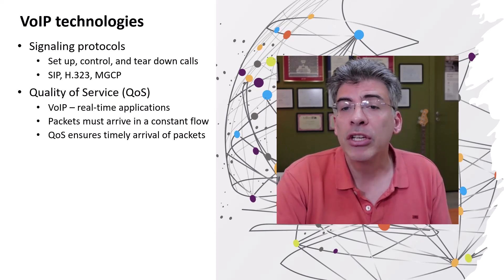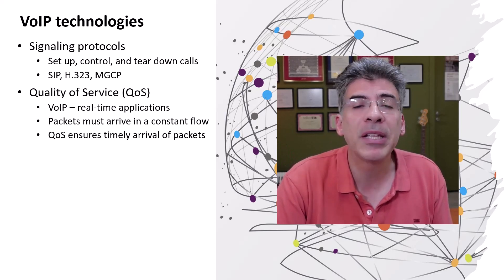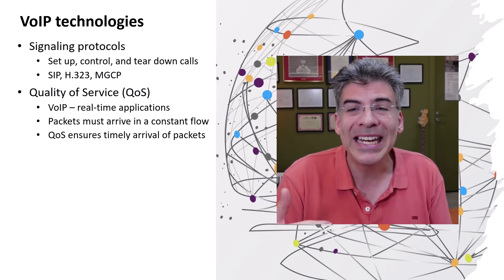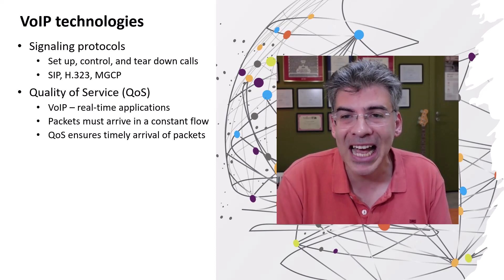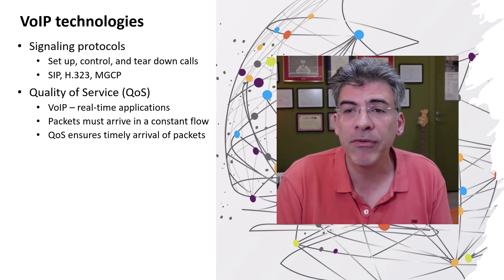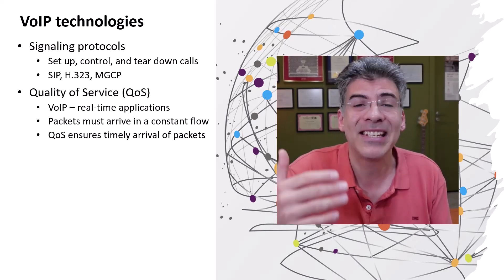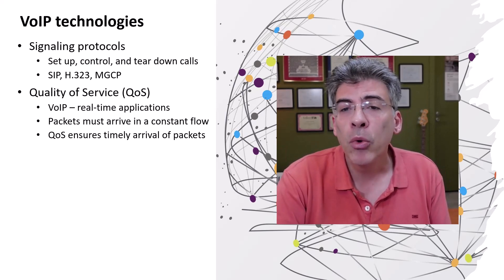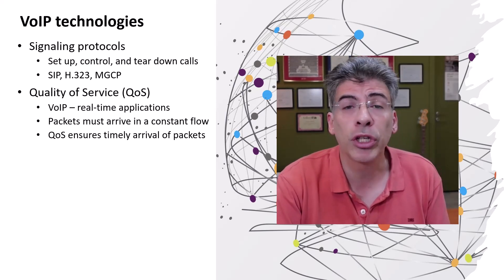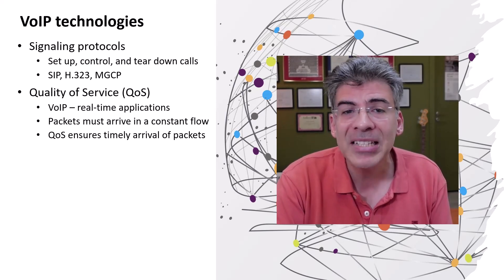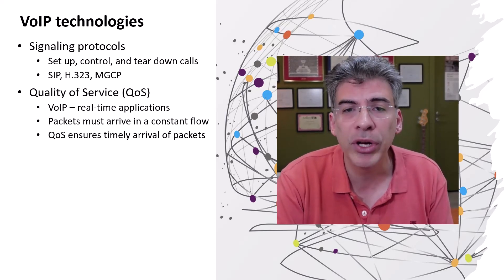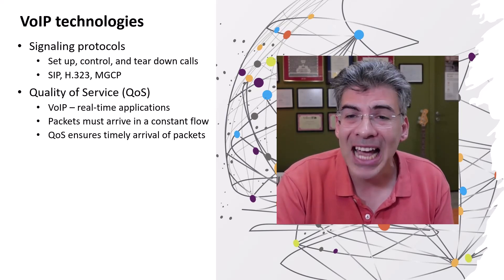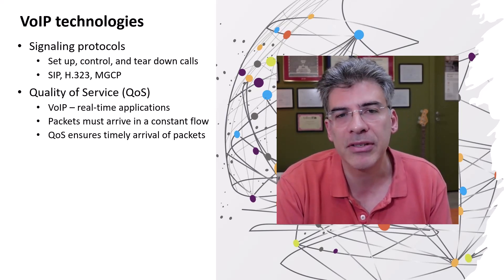Otherwise, you'll have gaps in the voice, disrupting the communications. IP networks are not inherently designed to carry voice traffic in this necessarily steady flow. And for this reason, quality of service, or QoS, mechanisms must be employed to ensure the prioritization and the timely arrival of these packets.